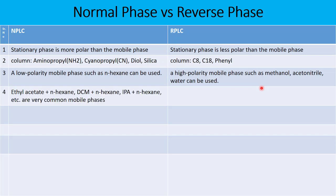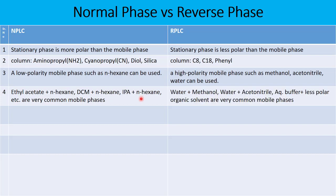Common mobile phase combinations for normal phase include ethyl acetate and n-hexane, dichloromethane and n-hexane, and IPA plus n-hexane. In reverse phase liquid chromatography, aqueous-based mobile phases such as water plus methanol, water plus acetonitrile, or aqueous buffer with a less polar organic solvent like ACN, methanol, or THF are very commonly used.